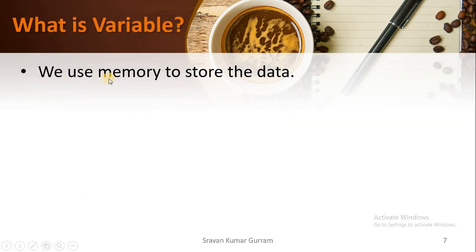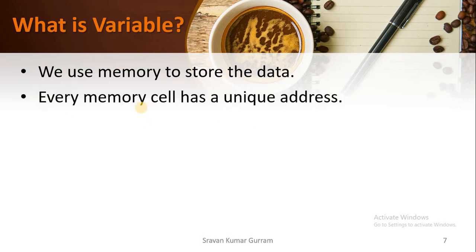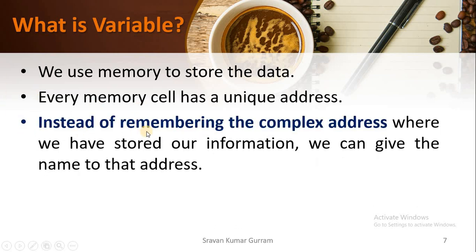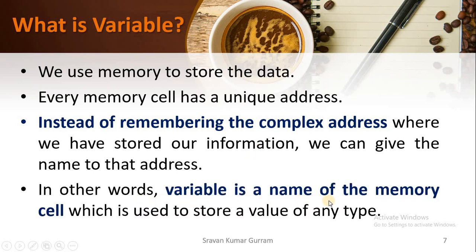What is a variable? We use memory to store data. In any programming language, if you want to store data, we use the concept of variables. The major purpose of a variable is to store data. Memory is a collection of different cells, and every cell has a unique address. Instead of remembering that complex address where we stored our data, we can give a name to that address. In other words, a variable is the name of a memory cell, which is used to store a value of any type.